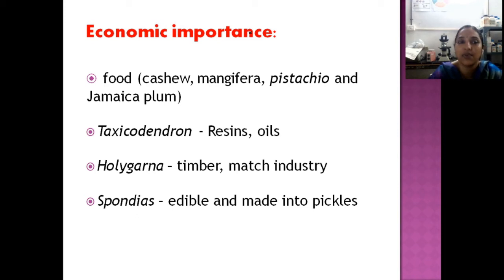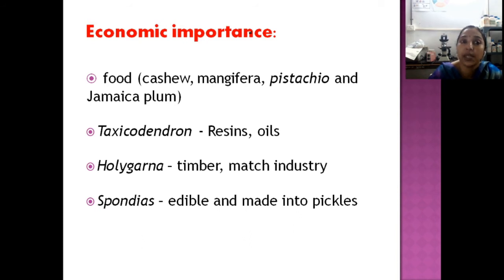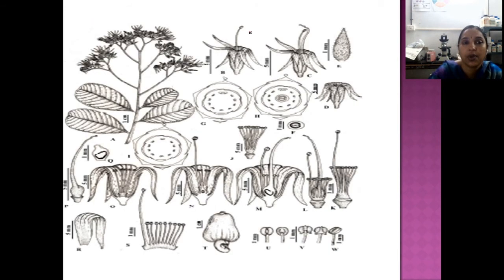Regarding economic importance: cashew and mango are well known. Jamaica plum is another important edible member. Resins and oils are obtained from Toxicodendron. Holigarna is used in the timber industry and match industry. Spondias is also edible and commonly used for preparing pickles.